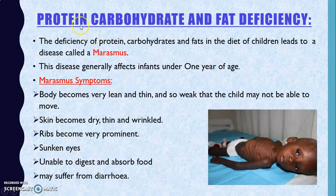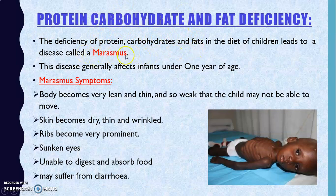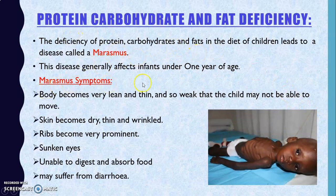The deficiency of protein, carbohydrates, and fat together in the diet of children leads to a disease called Marasmus. This disease generally affects infants under one year of age. Symptoms of Marasmus include a very weak and lean body — the skeleton is visible from outside — and the child may not be able to move by themselves.